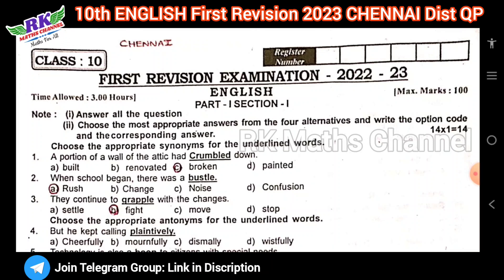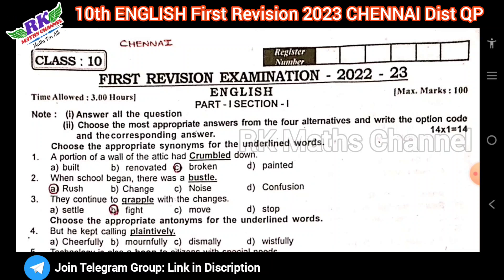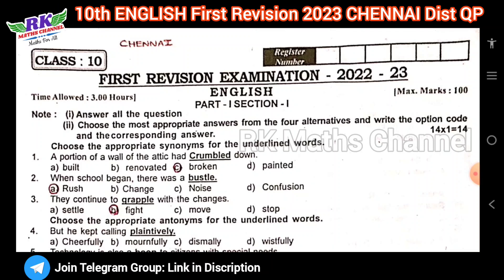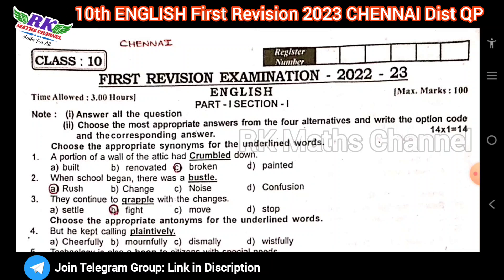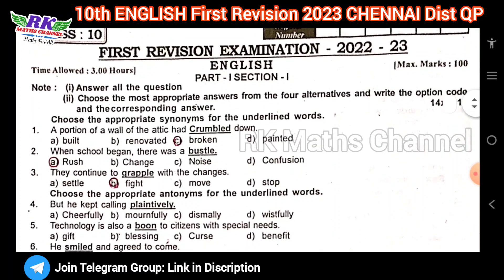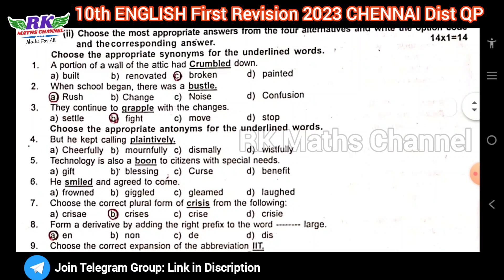We will upload the district question papers so they will be useful. From the English classroom, this is the first vision question paper. In total there are 14 bits and 100 marks. The first part has 14 bits, and there is a brief section as well.